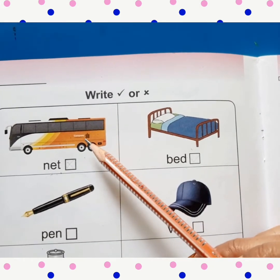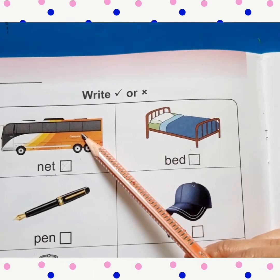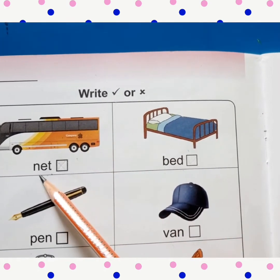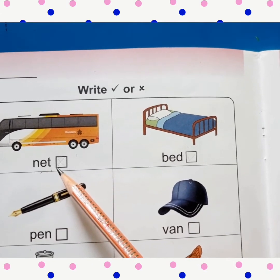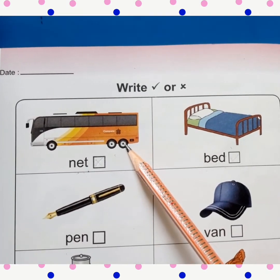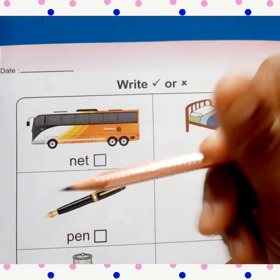So let's do exercise. Now let's see. Which is the first picture? Yes. This is a picture of a bus. And let's read the spelling. N-E-T net. Is the spelling matching with the picture? No. So we will put cross here.